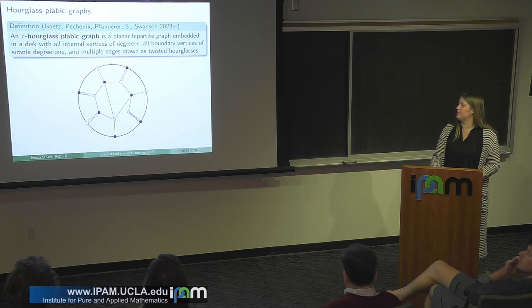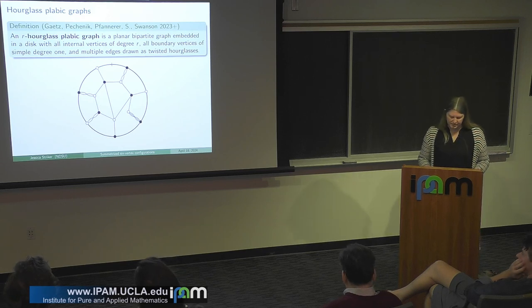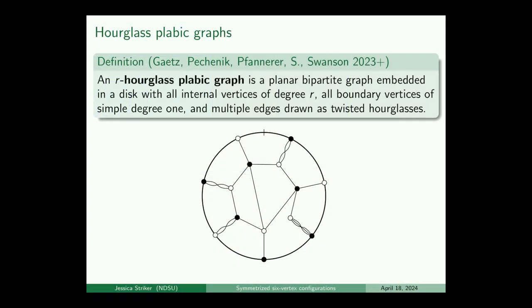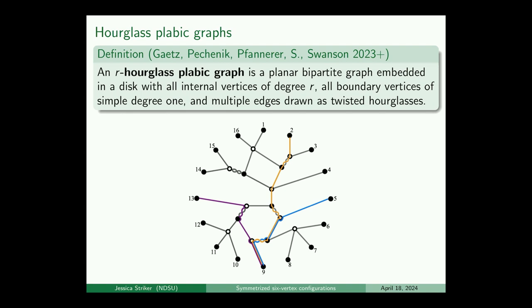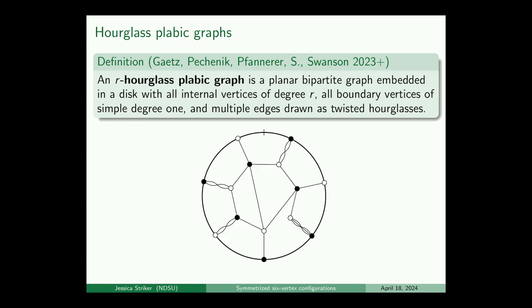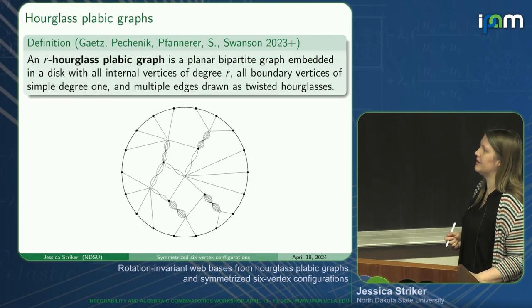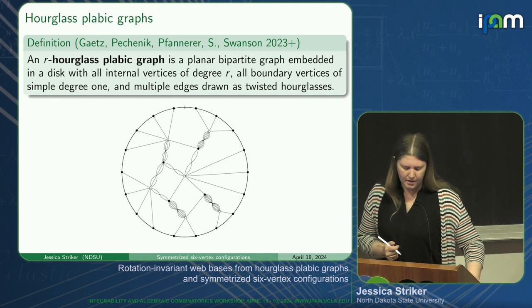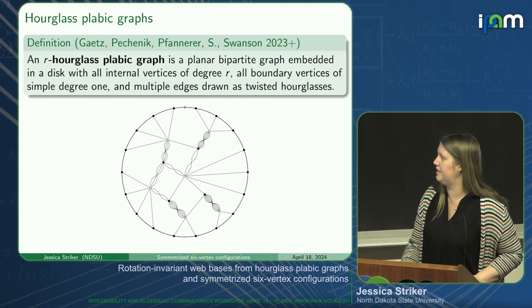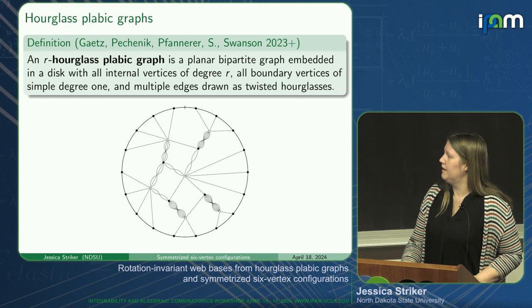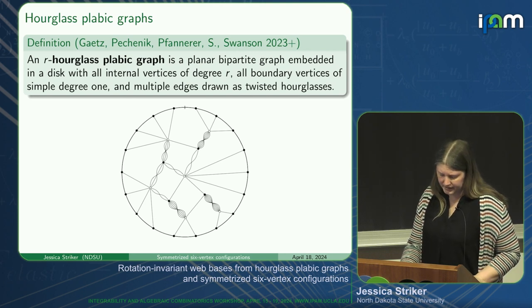Here are a few more pictures. This one satisfies our definition and illustrates what simple degree one means: around the boundary, you're not allowed to have two different edges coming out, though an edge that is itself an hourglass is fine. This also illustrates that boundary vertices don't necessarily need to be black—they could also be white. Here's another one of higher degree—a degree nine hourglass plabic graph where you count hourglass edges with appropriate multiplicity.